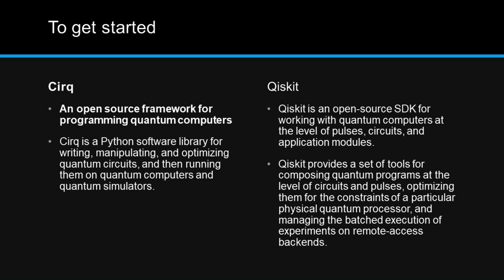Which is your favorite? Let me know in the comments below. Cirq is an open source framework for programming quantum computers — it is also a Python software library for writing, manipulating, and optimizing quantum circuits, and then running them on quantum computers and simulators. Qiskit is an open source software development kit for working with quantum computers at the level of pulses, circuits, and application modules. Qiskit provides tools for composing quantum programs, optimizing them for the constraints of a particular physical quantum processor, and managing batched execution of experiments on remote-access backends.